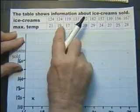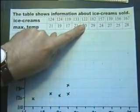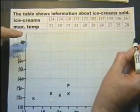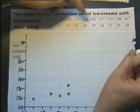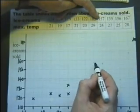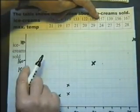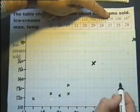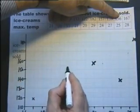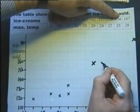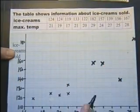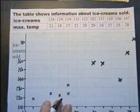So we've got 1, 2, 3, 4, 5. The sixth one is 182 on 29 degrees. So there's 29 degrees and there's 182. So that's just off the page there. 157 ice cream sold when it was 24 degrees. So there's 157. 139 when it was 27 degrees. 156 when it was 25 degrees. 24, 25. And the last point, 167, which is there when it was 28 degrees. So that's plotting the rest of the points.